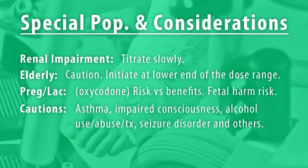Special populations and considerations: in patients with renal impairment, titrate slowly. In patients with hepatic impairment, caution is advised. In elderly patients, initiate at the lower end of dosing. General cautions include asthma, GI obstruction, impaired consciousness, alcohol use, abuse and treatment, seizure disorders, and others. Regarding pregnancy, weigh the risks and benefits, especially with prolonged use, and use an alternative before and during labor — there is a risk of fetal harm. Regarding lactation, consider alternatives and monitor the infant closely if the dose exceeds 30mg per day due to risk of infant CNS respiratory depression.